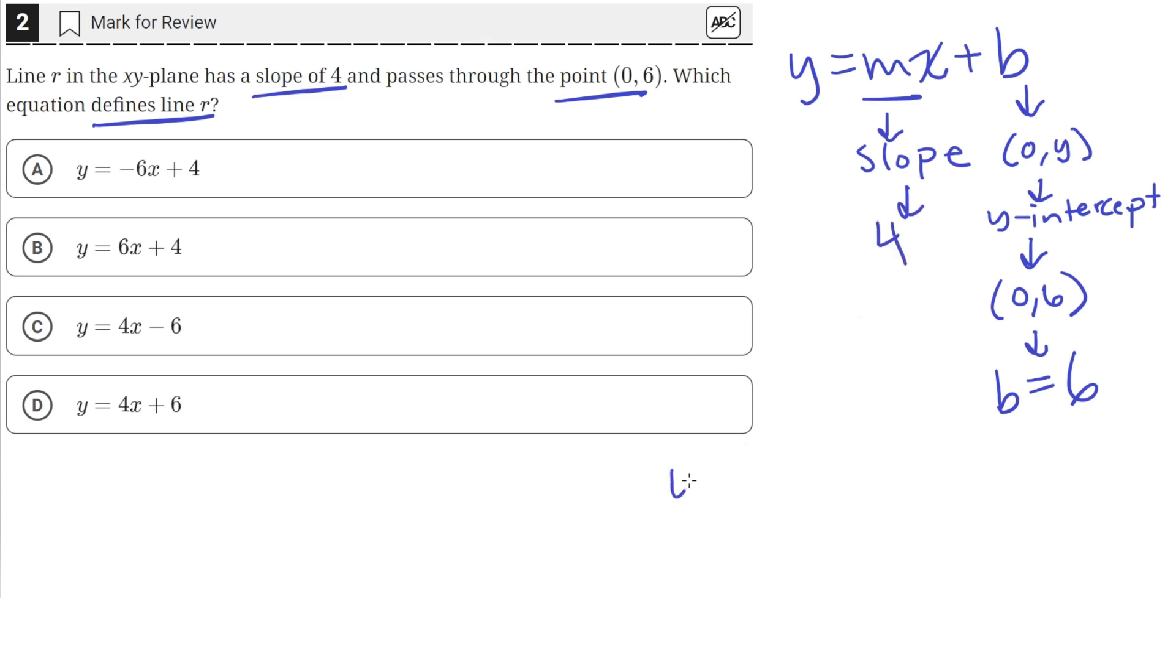Using that information, we can construct the equation. y equals 4x plus b, where x is the input variable, y is the output variable, 4 is the slope,